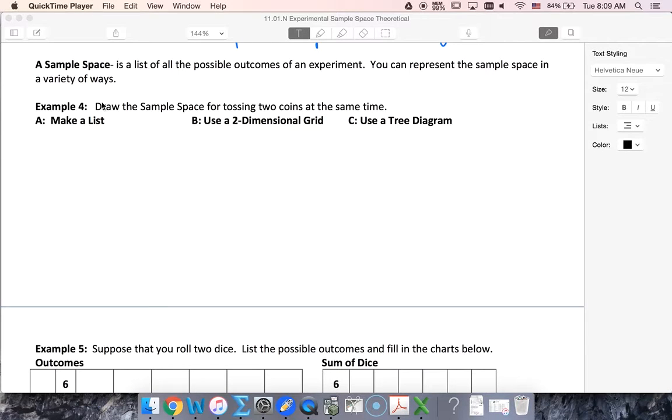Sample spaces are really handy because they give us ways to visualize all of our different outcomes. There's three different styles generally of sample spaces that we can use: one is an organized list, another is a 2D grid, and another is a tree diagram.